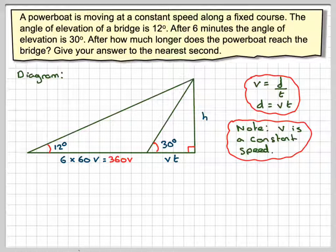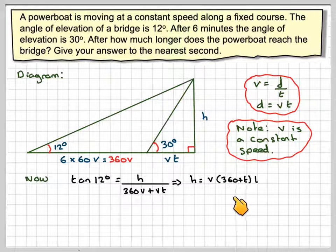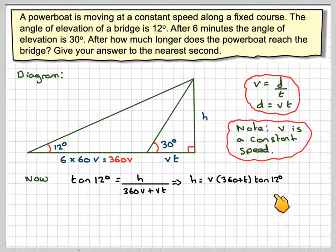If we now do a little bit of right angle trigonometry on this large triangle, we can say that tan 12 degrees is the opposite, which is h, divided by the adjacent, which is 360v plus vt. That makes h equal to v times (360 plus t) tan 12°, taking v out as a common factor.